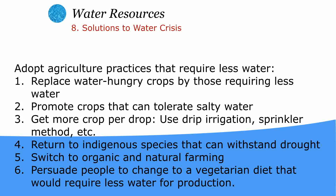To save water for agriculture, we should replace water-hungry crops with those requiring less water — for example, rice is a water-hungry crop. We should promote crops that can tolerate salty water, get more crops per drop, use drip irrigation and sprinkle irrigation, return to indigenous species that can withstand drought, switch to organic and natural farming, and educate people to adopt a vegetarian diet, which requires very less water for production.